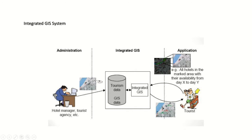On the tourist side, tourists search for better tourism places and query the GIS-based system. The integrated GIS system collects tourism data from administrators, processes it, and finally provides better data for the tourists.